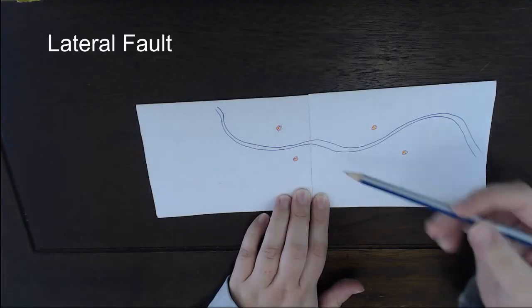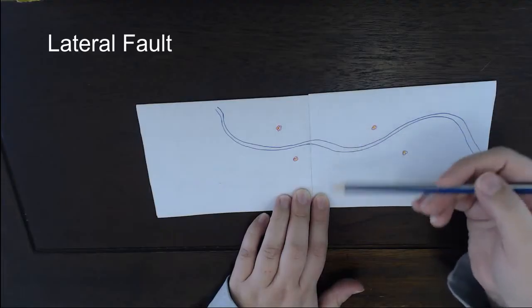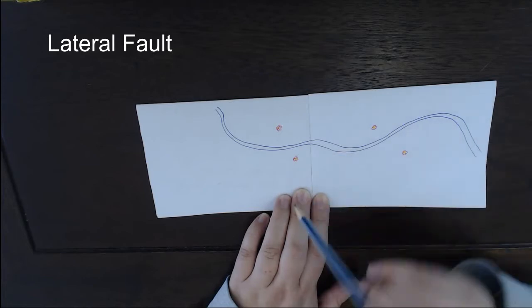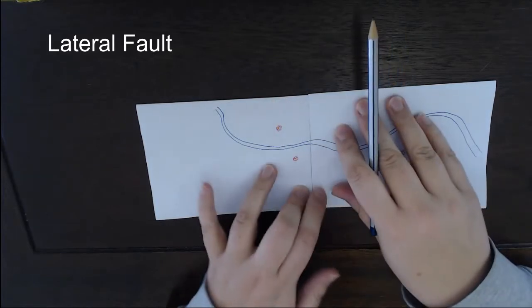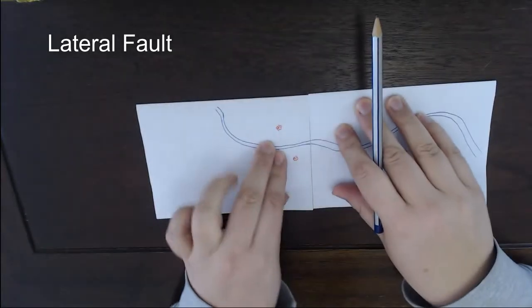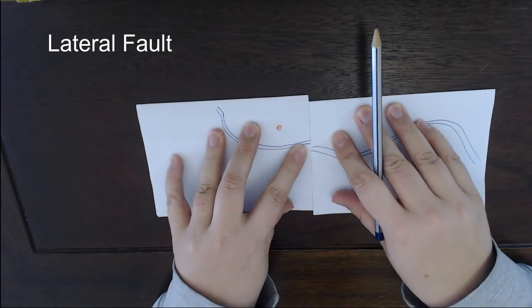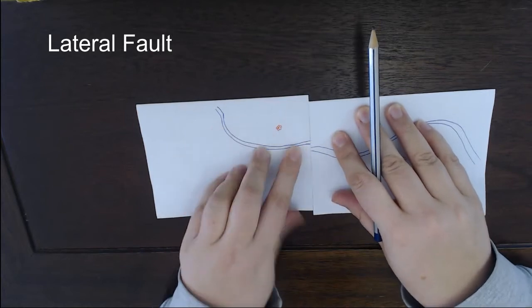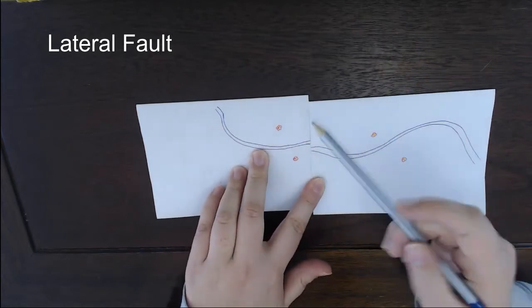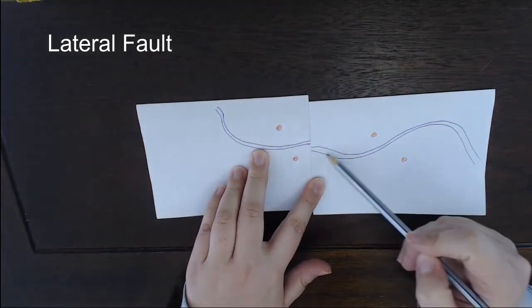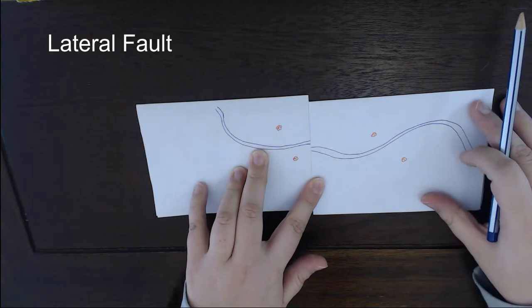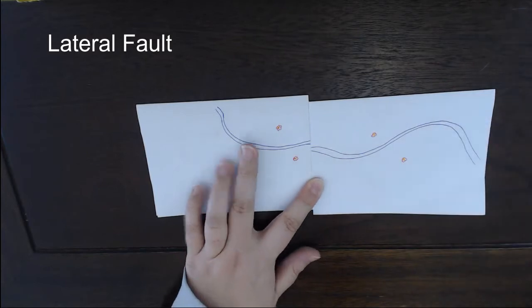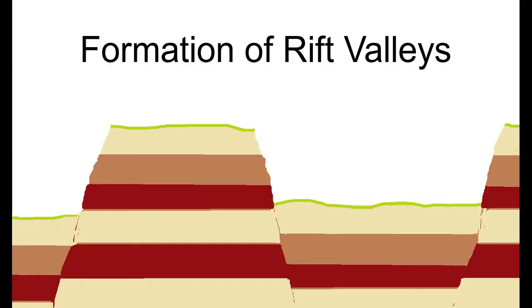The final type of fault is a lateral fault. What happens here is if you have two pieces of rock — one moving towards you and the other moving away — there's a slip, and a fault line forms along that fault plane.